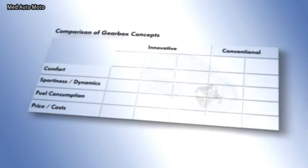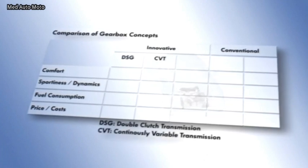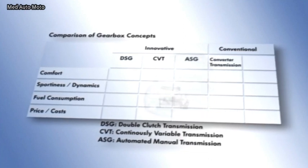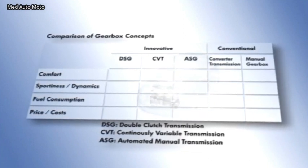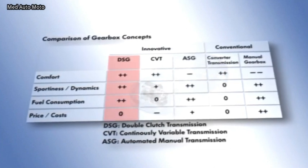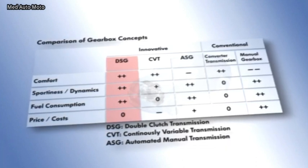The special quality of the DSG becomes evident in direct comparison with other gearbox concepts. With regards to comfort, sportiness and dynamics, and in terms of fuel economy, the dual clutch gearbox cannot be beaten. The manually selected gearbox is ahead in price alone. The sum of positive attributes speaks clearly in favor of the DSG.